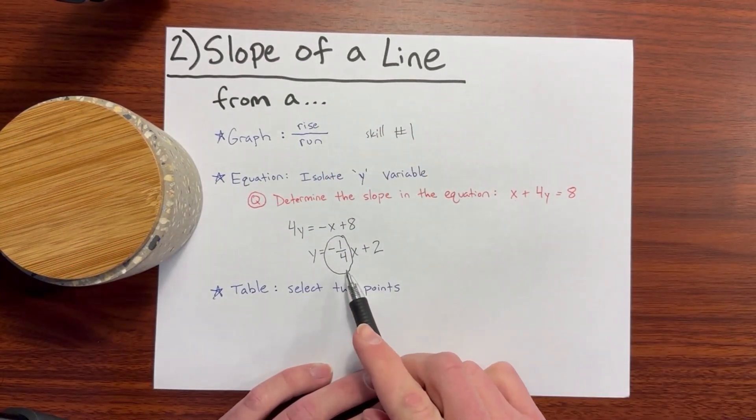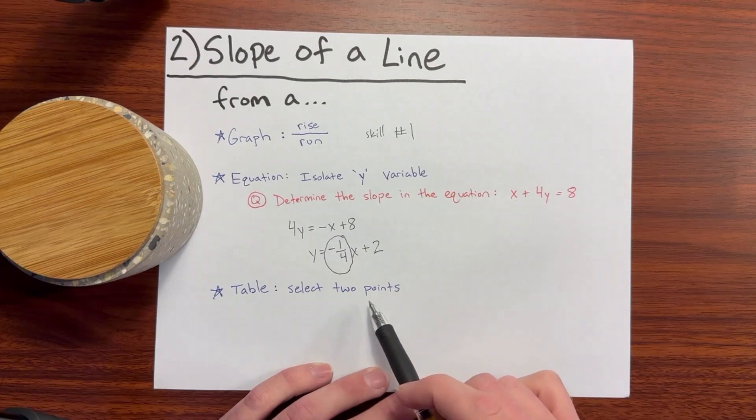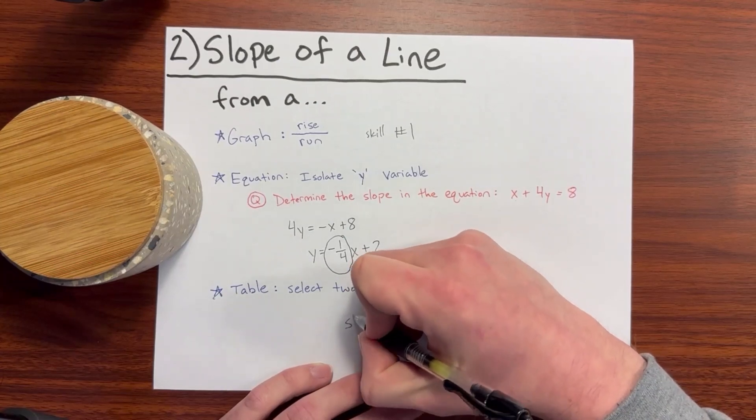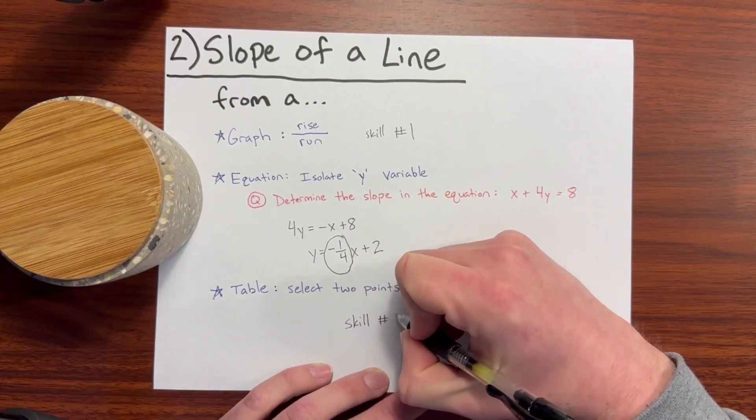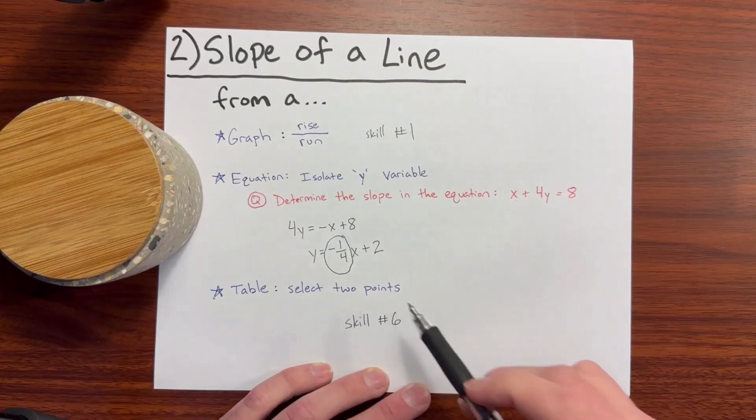For determining the slope of a line from a table, you will select 2 appropriate points from that table, and then determine the slope of the line. And if you want to see how to do that, jump ahead to skill number 6, where we cover determining the slope from 2 points.